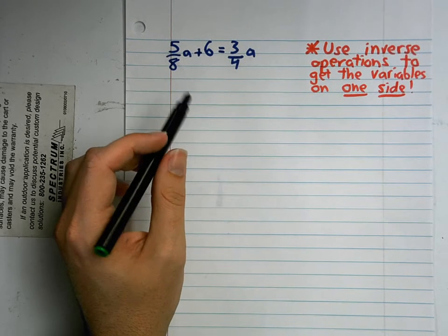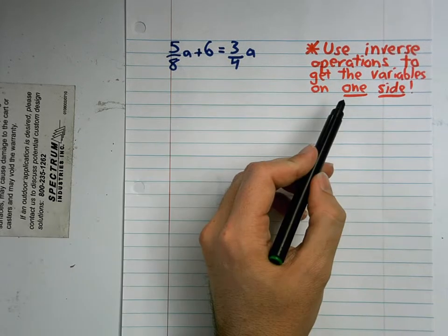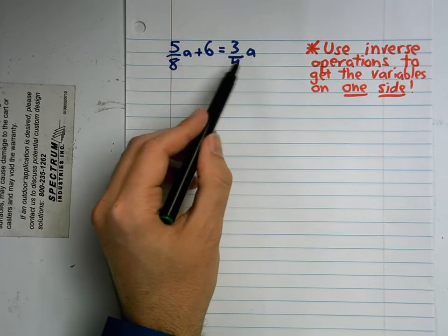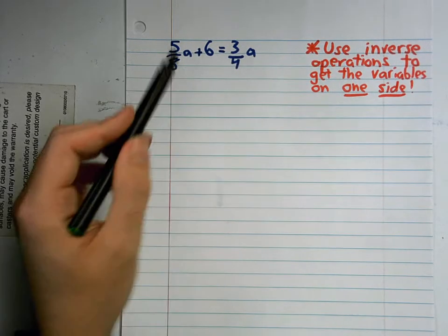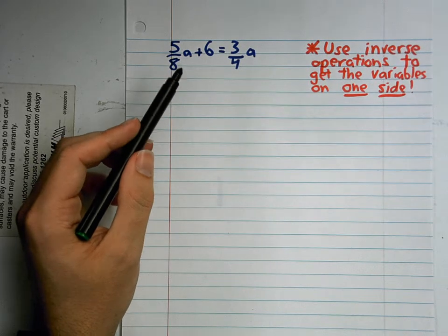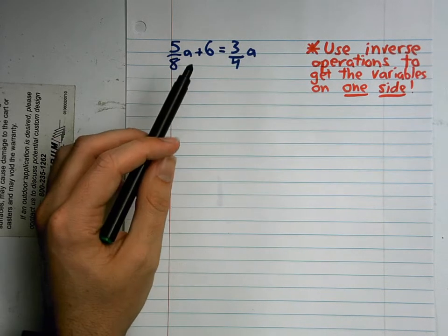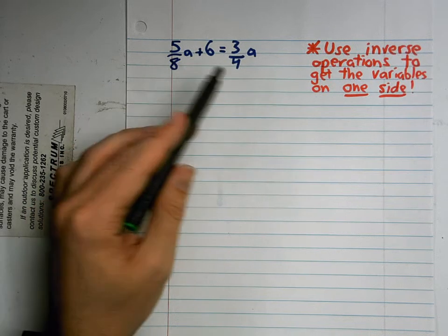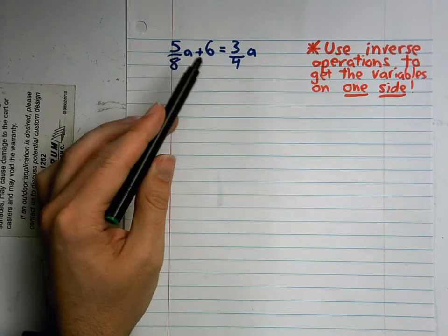Good news is you just have to keep using the inverse operations. 5/8 times a, 3/4 times a, we're going to do the same thing as if it were a whole number, a 2 times a and a 4 times a. We're going to use inverse operations to get our variables on one side or the other.